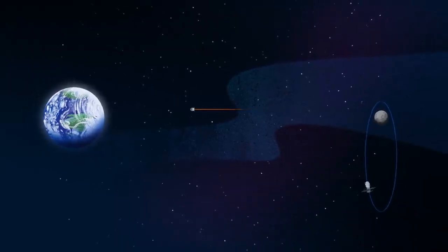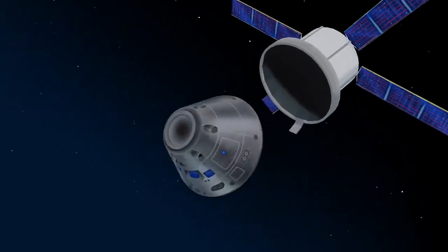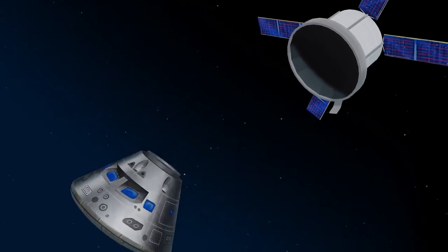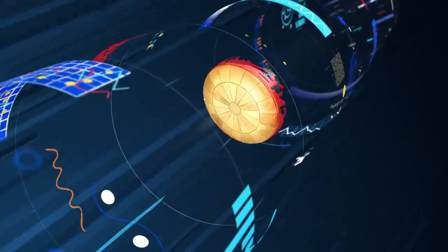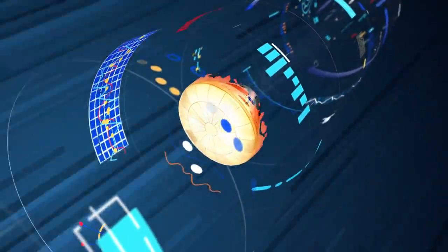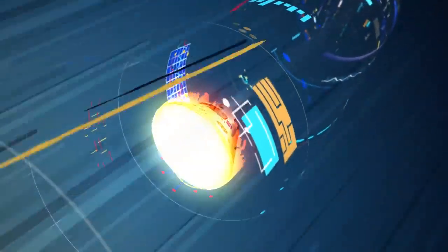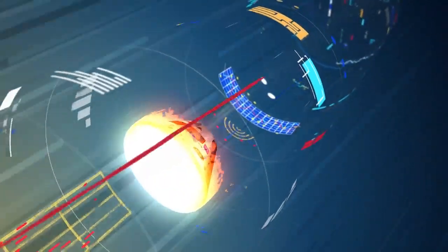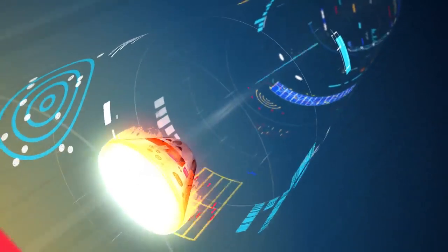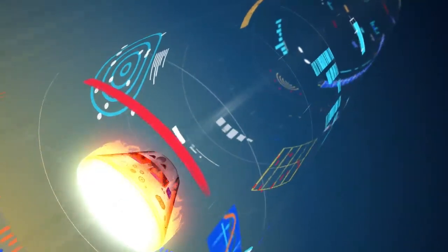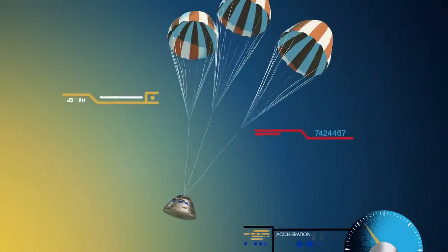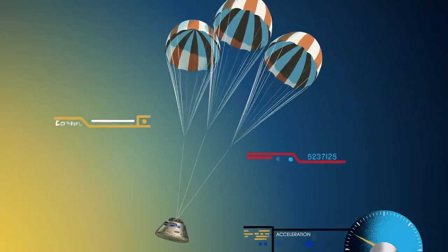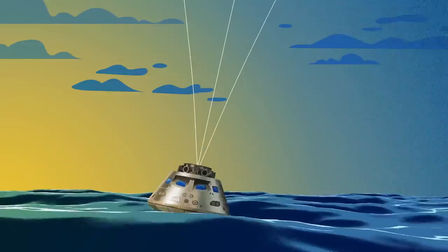As they near the end of this journey, the service module is released, and the crew module is oriented heat shield first. Entering Earth's atmosphere at 25,000 miles per hour, the friction of air slows Orion considerably, while also subjecting it to temperatures of 5,000 degrees. With the Orion now at just 300 miles per hour, a series of parachutes uniquely tested and produced for this moment deploy, decelerating the craft to just 20 miles per hour for splashdown.